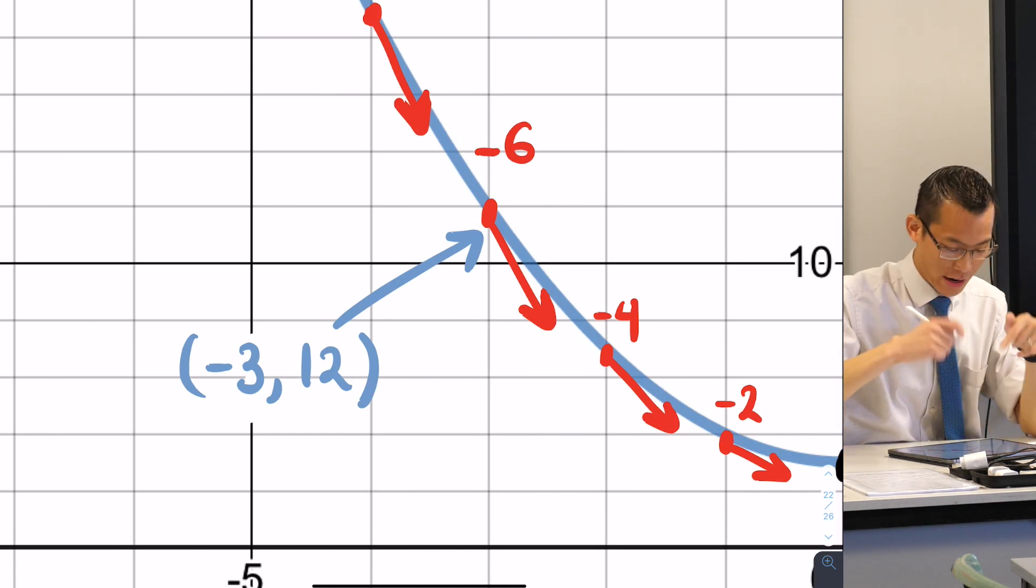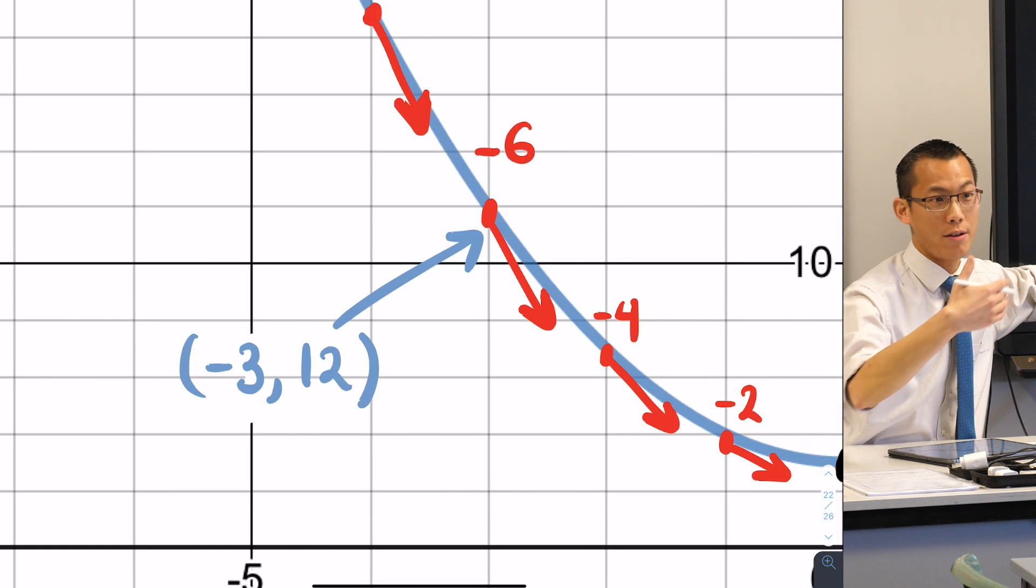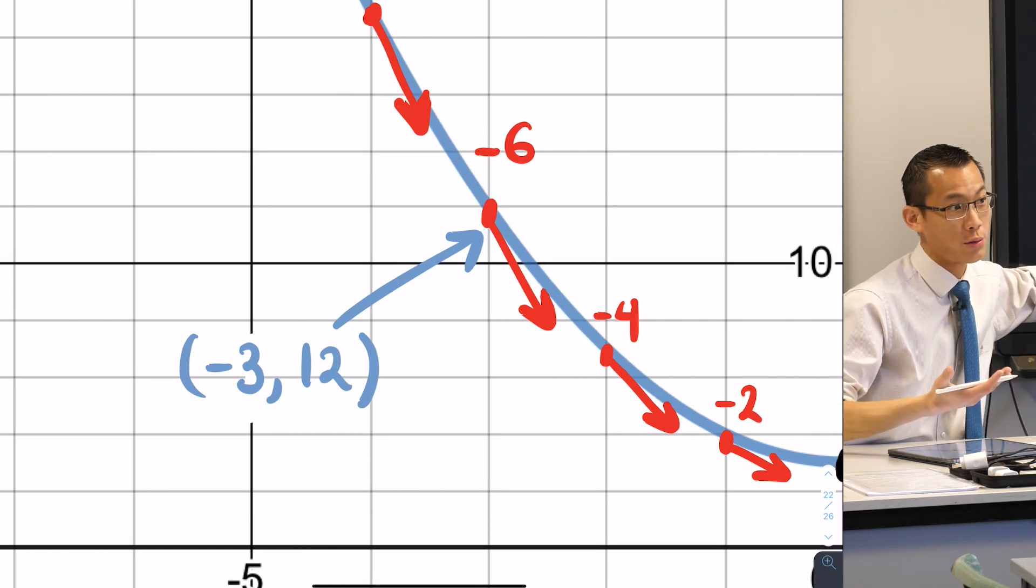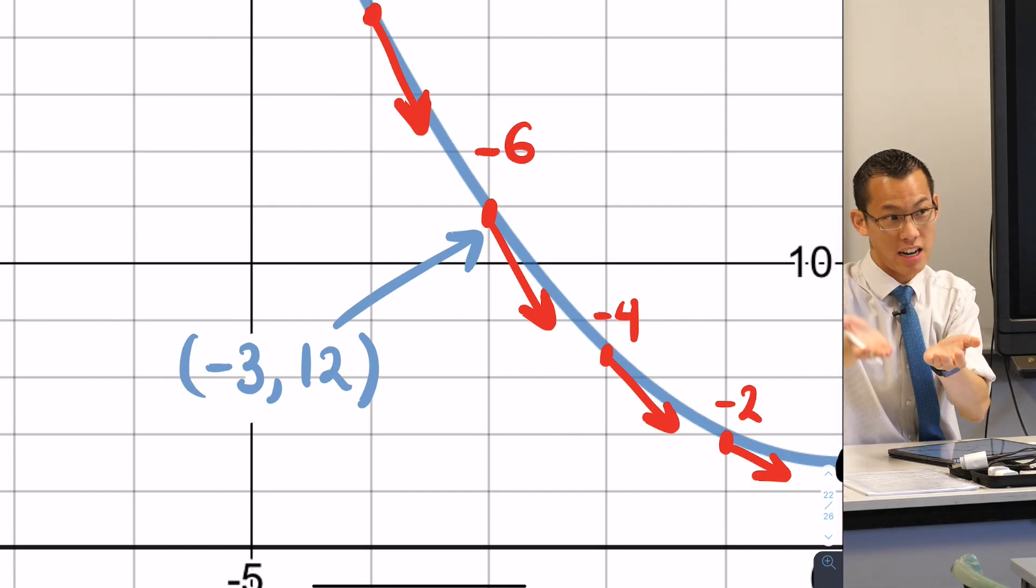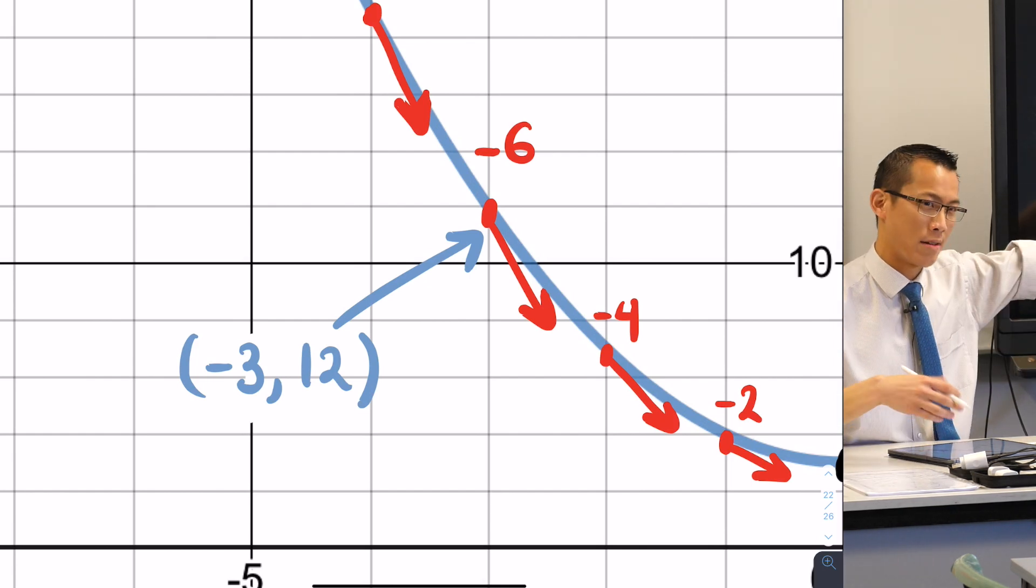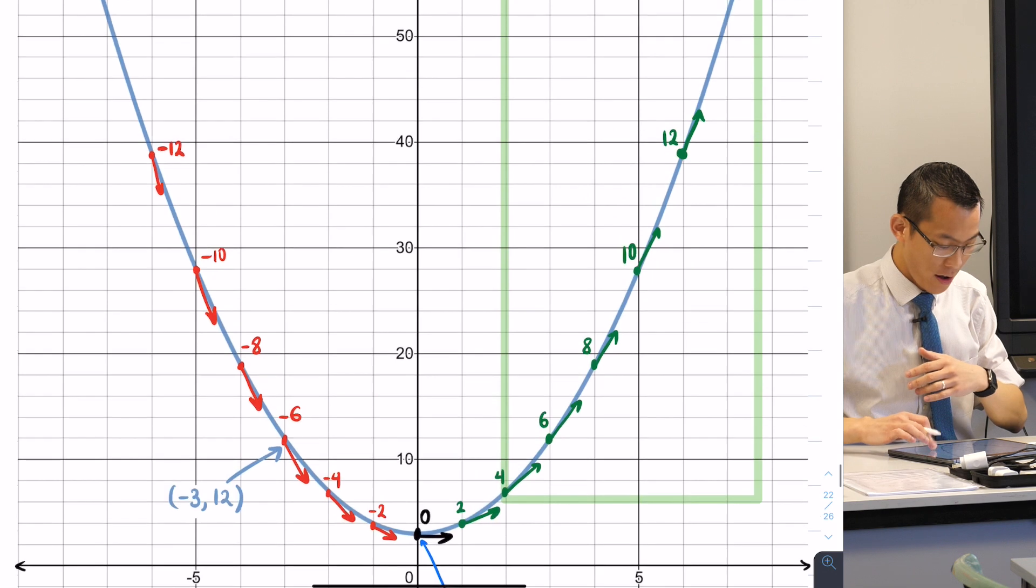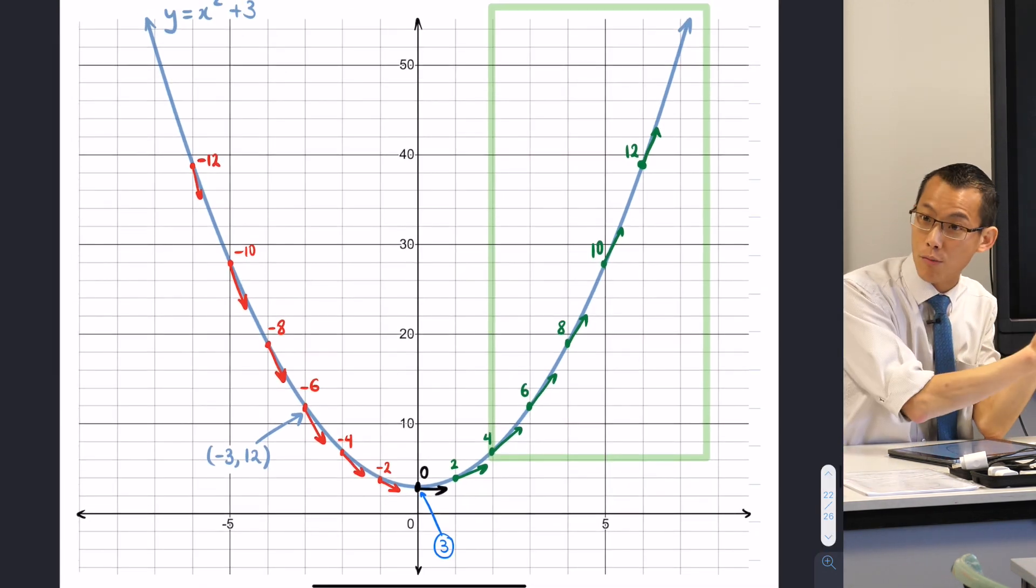So just making sure you see where I got this from. I asked you to evaluate when x is negative 3, what's the function equal to? You got an answer of 12. And what that tells you is a pair of coordinates, negative 3 comma 12, they go together, so that's the point I decided to put on there. All right, happy time. So you got a rough sketch.